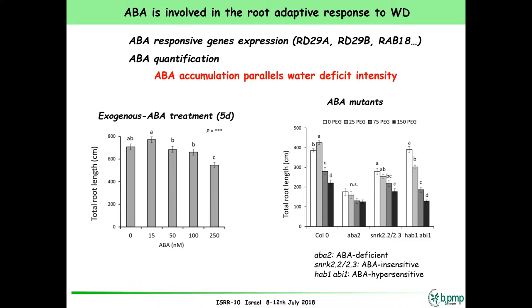We went further and analyzed lateral roots on the primary root, looking at the mean length of lateral roots produced there. You see a stimulation of root growth not only for mild water stress, but for slightly more severe water stress too. And for second-order lateral roots — lateral roots on lateral roots — you see a stimulation whatever the water stress level is. So water deficit has a dual effect: the response also depends on root type and root age, differing between primary and lateral roots, and between young and older lateral roots.